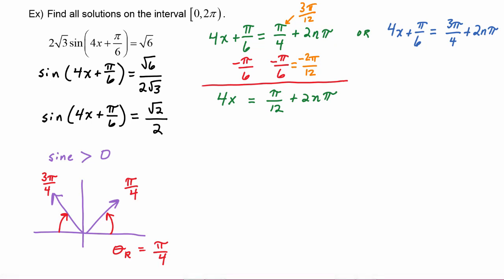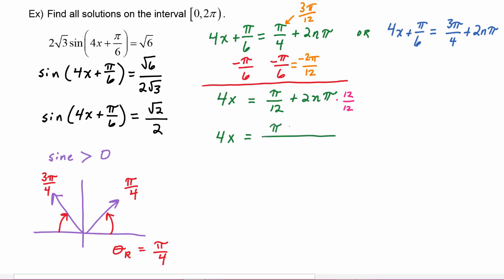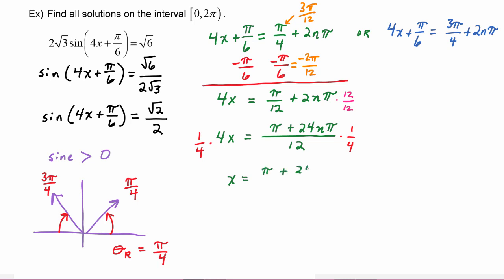Getting a common denominator on the right-hand side — which is twelve — we multiply two n pi by twelve over twelve. Our equation becomes: 4x = (π + 24nπ)/12. To get x by itself, we divide by four, which is the same as multiplying by one fourth. Our equation becomes: x = (π + 24nπ)/48. This is the first formula for all solutions.